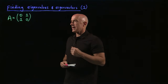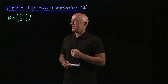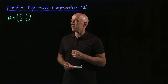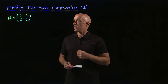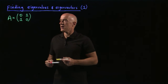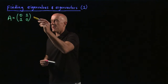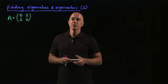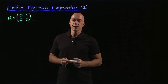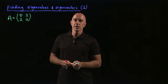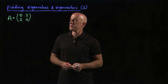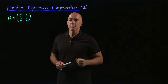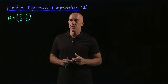Here we're looking at the simple matrix given by A, which is 0, 1, 1, 0. It's a symmetric matrix, and it turns out that all symmetric matrices have real eigenvalues. So the eigenvalues for this matrix will be real.